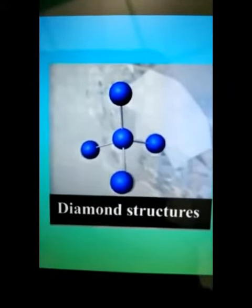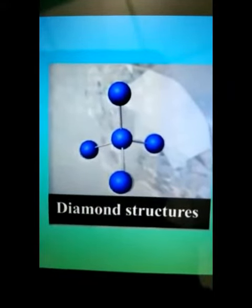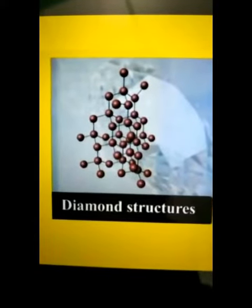In Diamond, each Carbon atom is bonded to 4 other Carbon atoms, forming a rigid 3D structure.